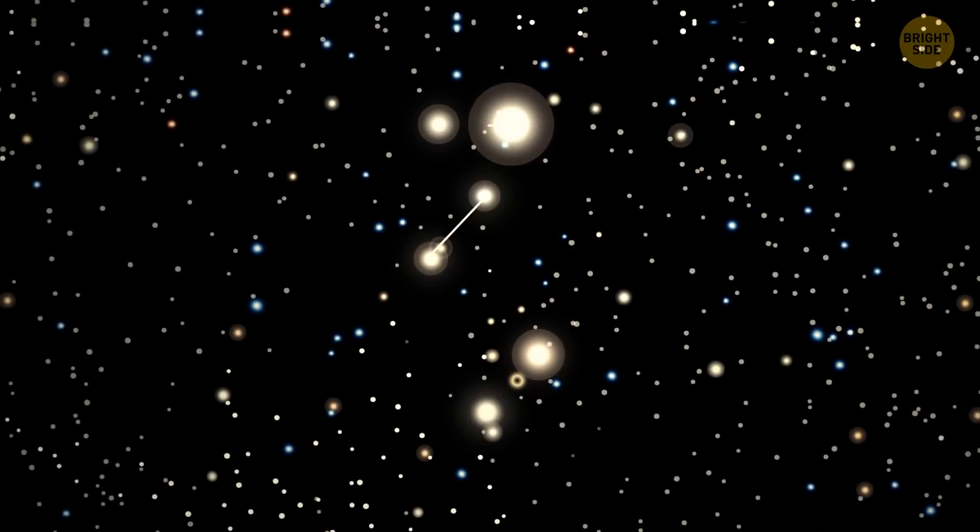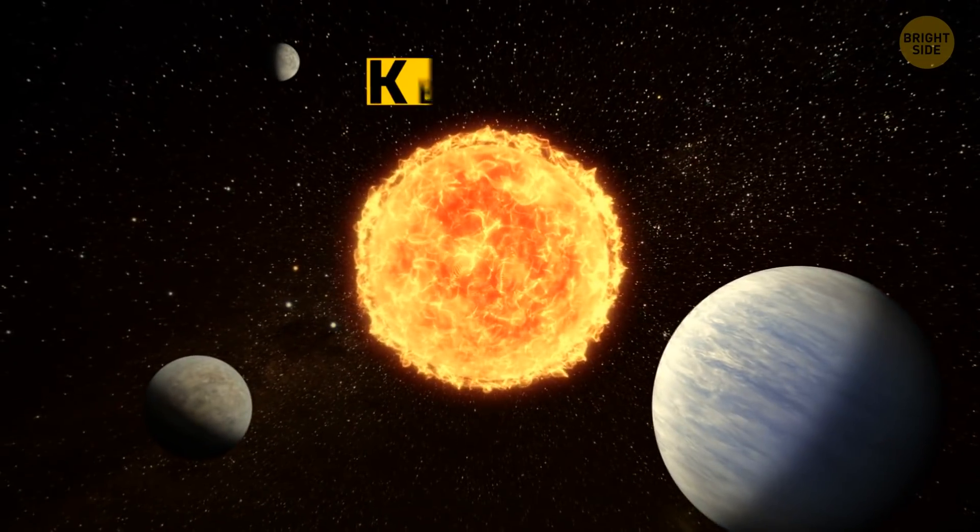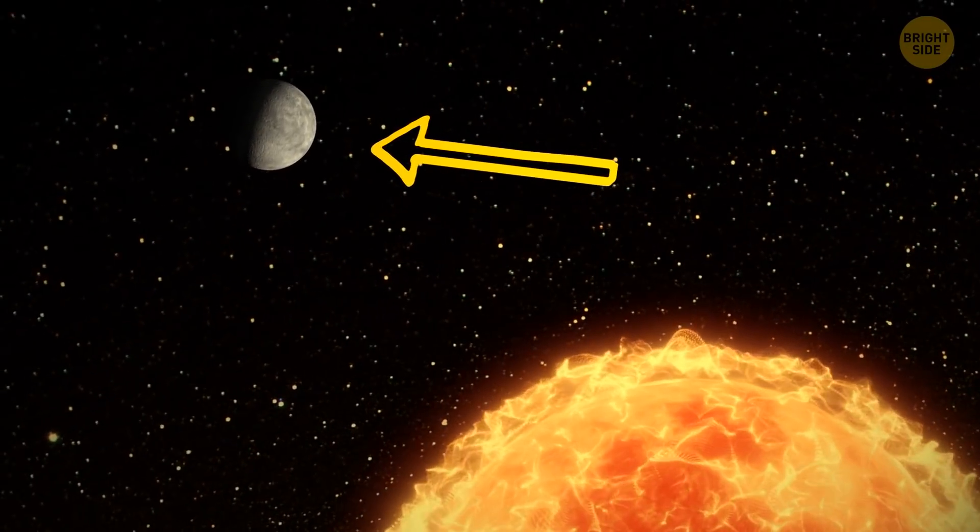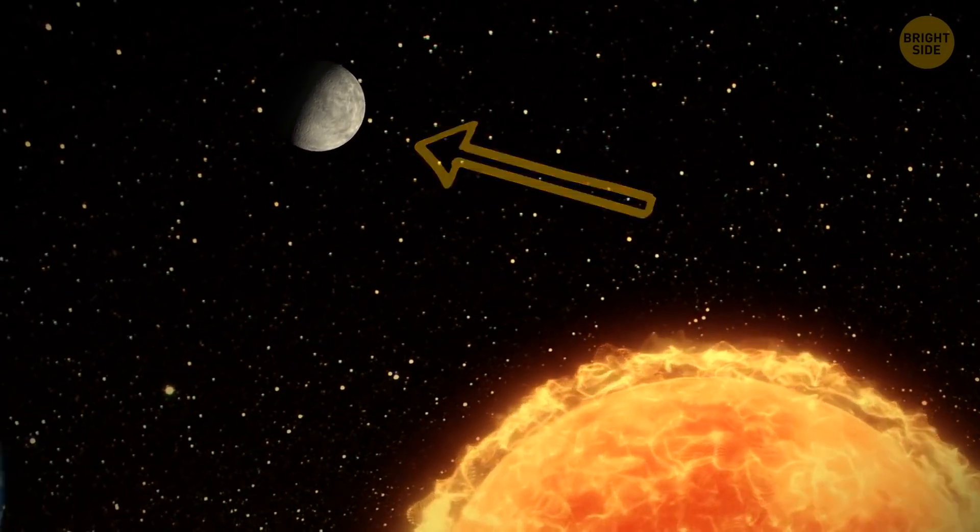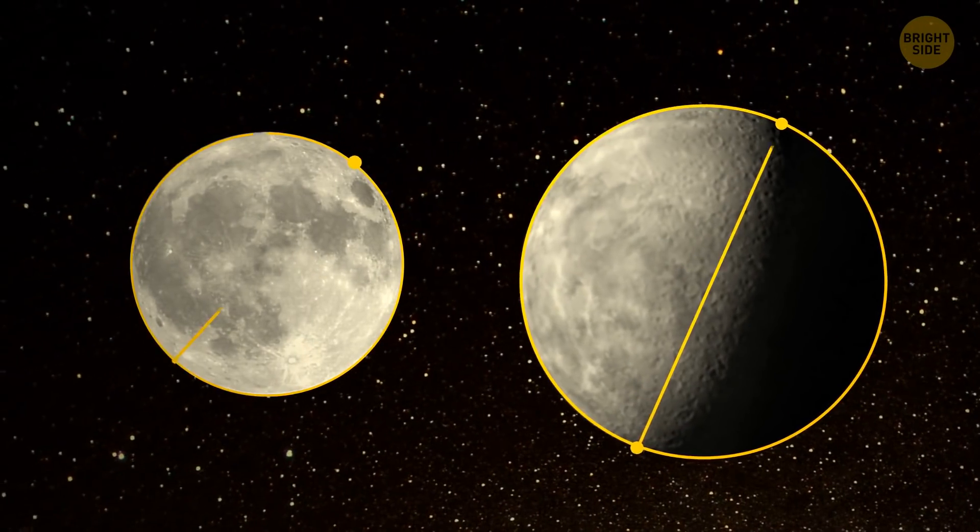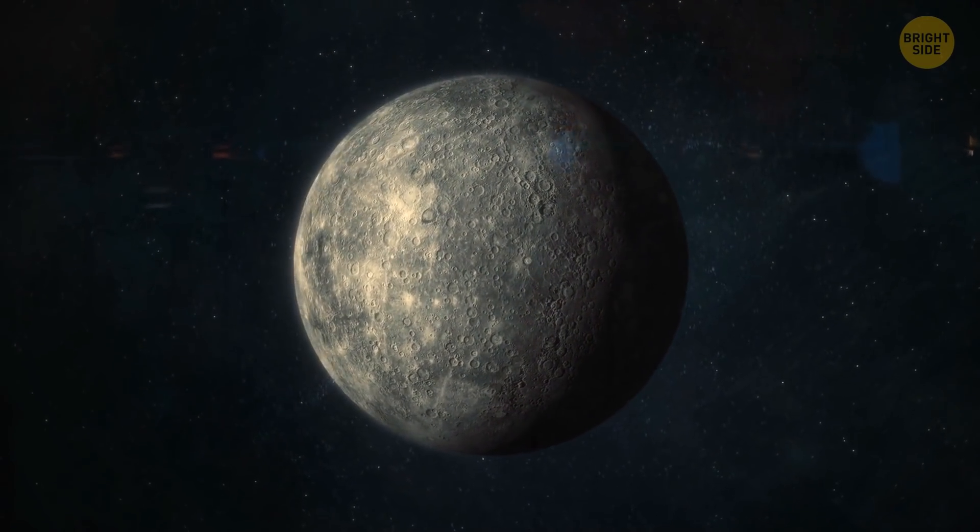Around 210 light-years away from Earth, there's the constellation called Lyra. That's where the Kepler-37 system is. Kepler-37b is the smallest planet in it, with under one-third of the Earth's mass. It's just a little bit bigger than the Moon. Scientists believe this is an airless and rocky planet, similar to Mercury.